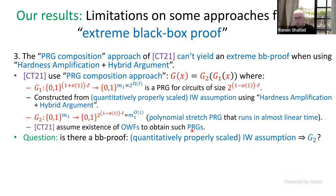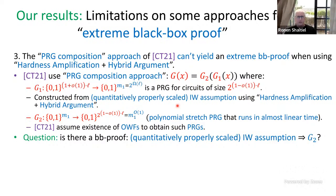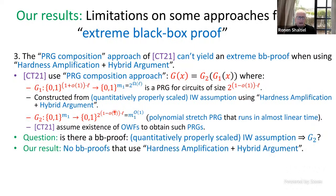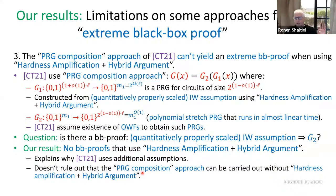A natural question is: can we use the quantitatively properly scaled Impagliazzo-Wigderson assumption with a black-box proof to construct G2? If we could, we'd get rid of the additional assumption. Our result is that it's impossible for black-box proofs that use hardness amplification and the hybrid argument. This explains why Chen and Tell need additional assumptions — but unlike the previous result, it doesn't rule out that maybe the PRG composition approach can be carried out without hardness amplification via some different argument.